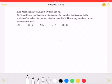Ten different numbers are written down. Any number that is equal to the product of the other nine numbers is then underlined. How many numbers can be underlined at most?